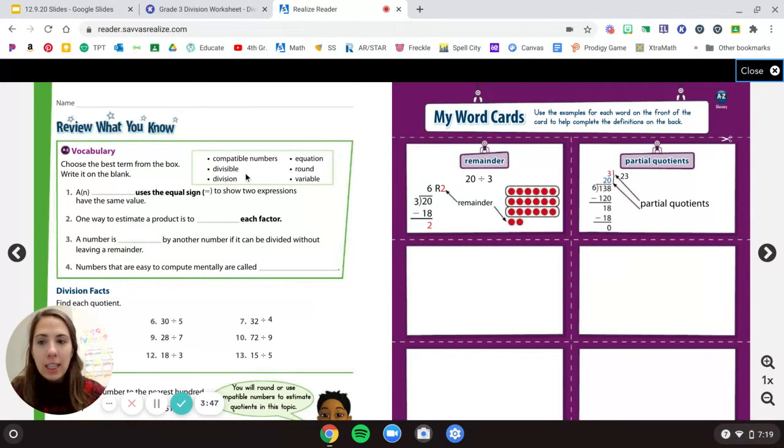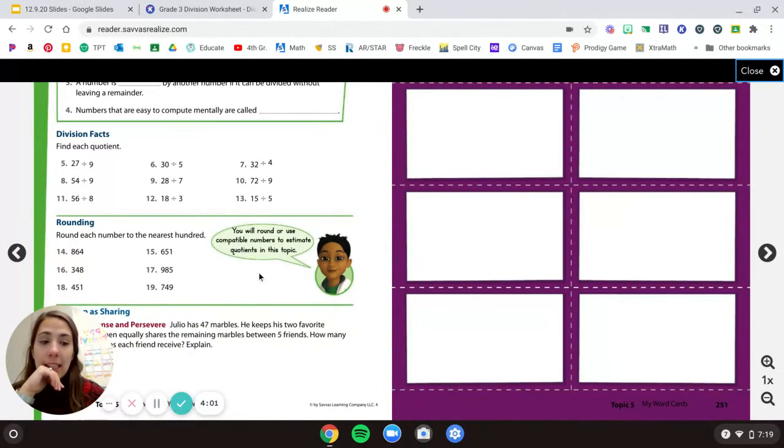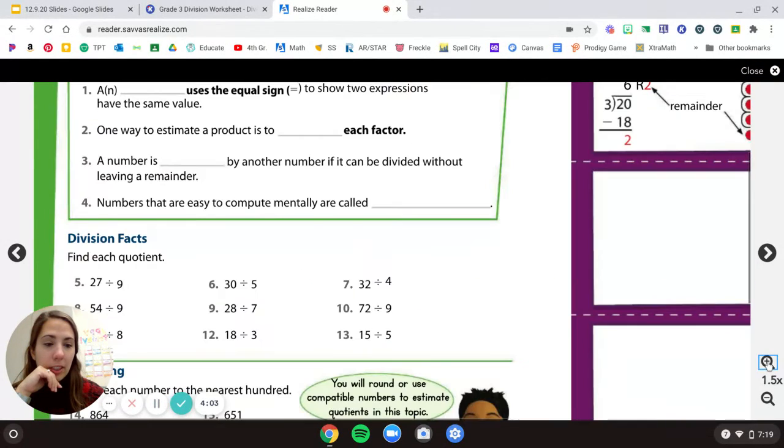It should look like this. So review what you know. On the right side, there's vocab cards. If you want to cut those out and use them to review our vocab words, that's awesome. But you do not have to do that, okay?